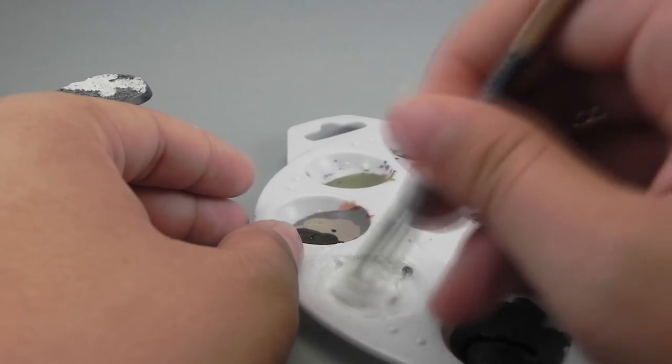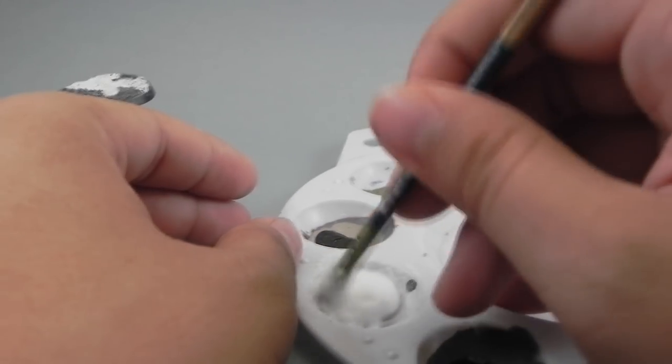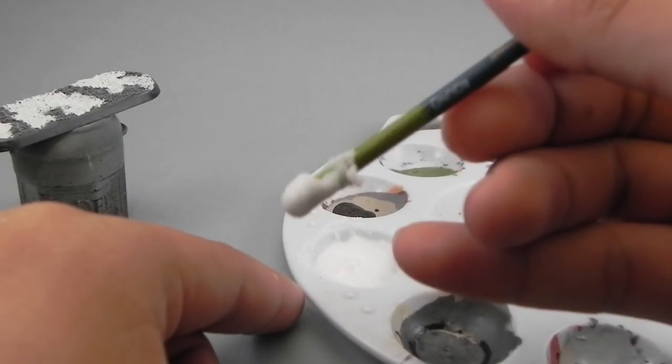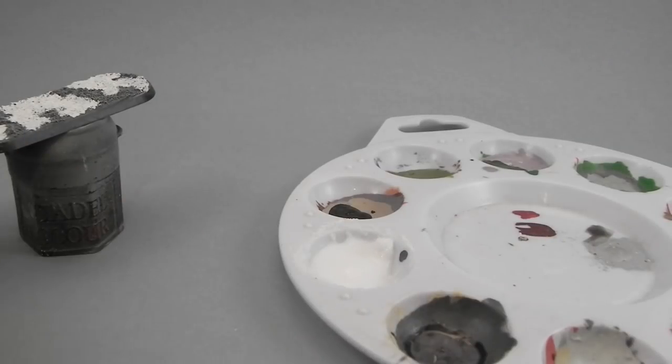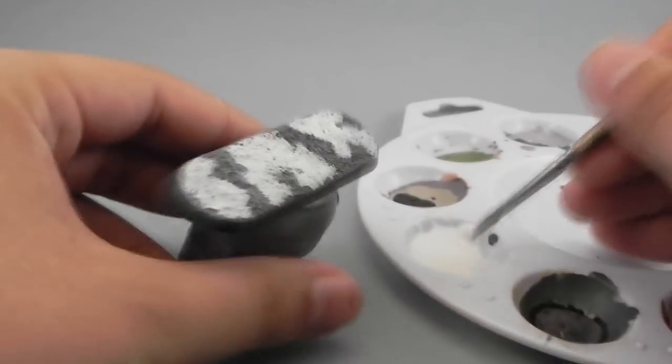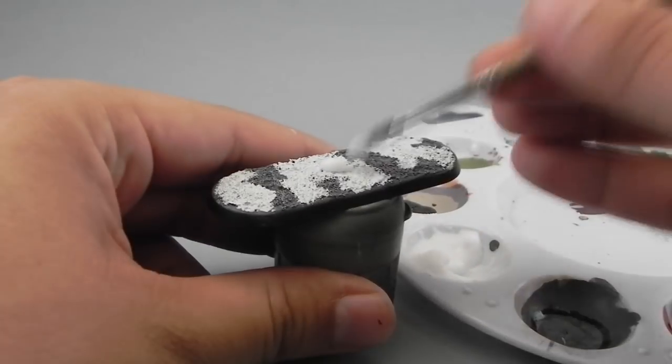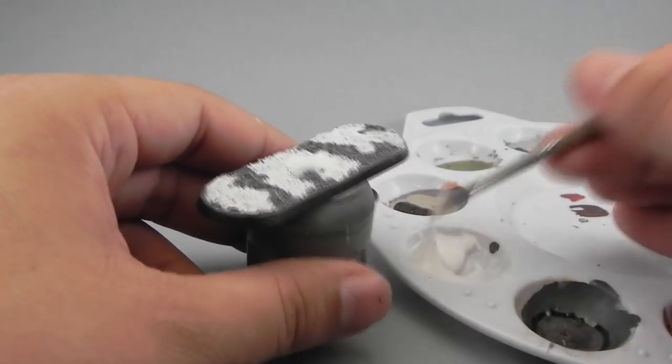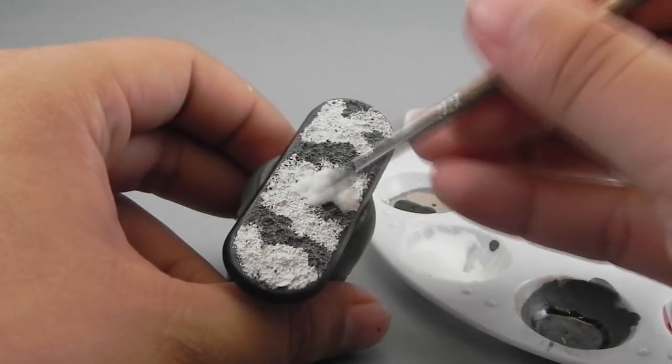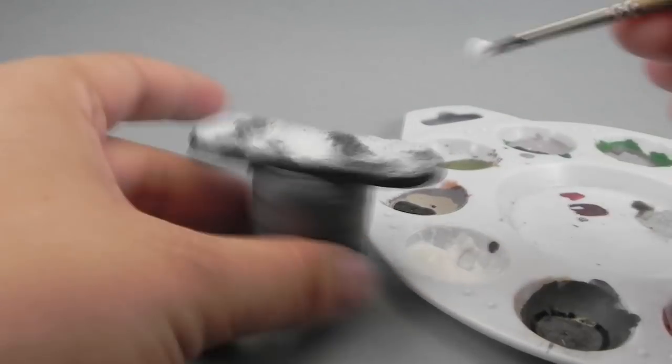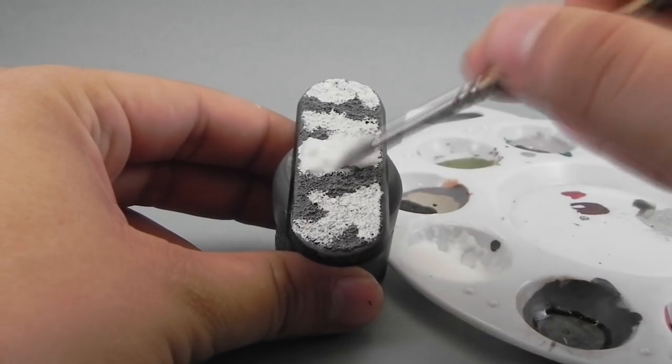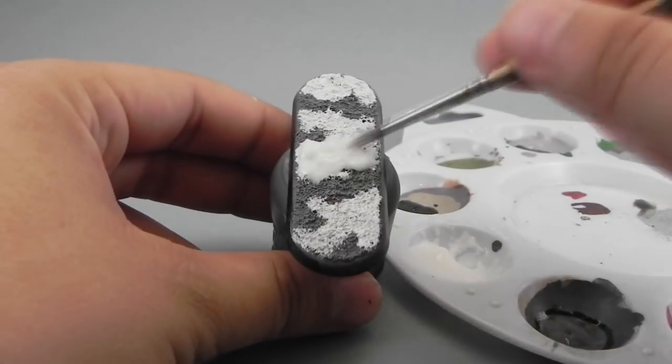Because if it's got too much flock, it's too sticky to work with and if it has too little, it's really, really watery and doesn't bring any texture to the base. So you have to find a middle ground where you have little clumps and where you can see like snow lumps and texture.